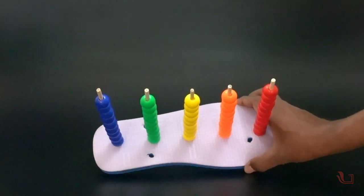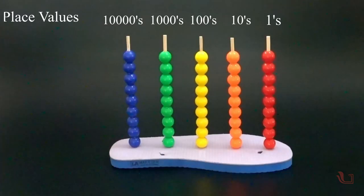Here, you can see all 5 sticks have 9 beads each which represent place values from units to ten-thousands place.